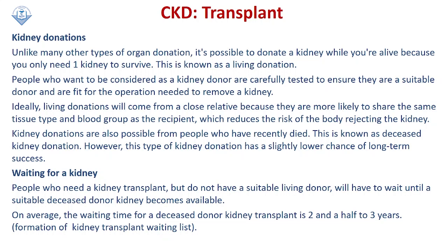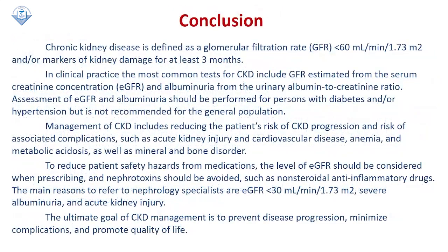Ideally, living donations come from a close relative, as they are more likely to share the same tissue type and blood group as the recipient, which reduces the risk of rejection. Kidney donation is also possible from people who have recently died, known as deceased donation; however, this type has a slightly lower chance of long-term success. People without a suitable living donor are placed on a waiting list and usually receive dialysis to prolong life until a donor kidney becomes available, which may take one, two, three years or more.